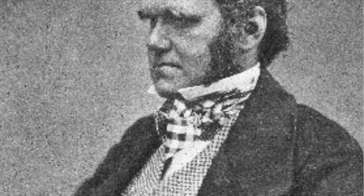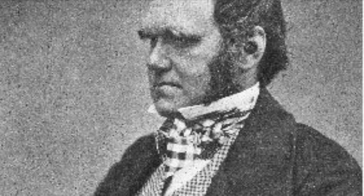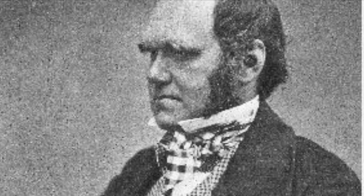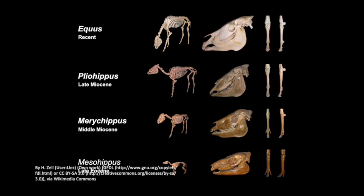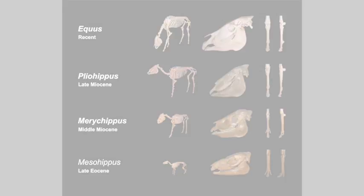He understood that it was important to have evidence to support his theory, but also looked for evidence that might disprove it and then study that as well. Darwin's theory of evolution depended on the diversity of life being explained by many small changes or modifications in a species over time, and for these changes being passed down through the generations through reproduction.